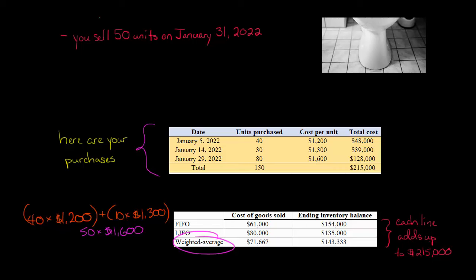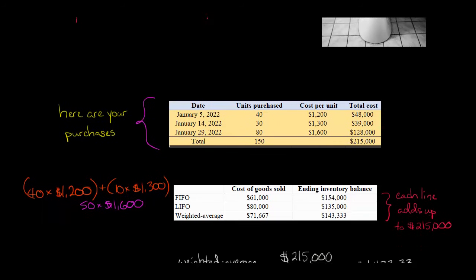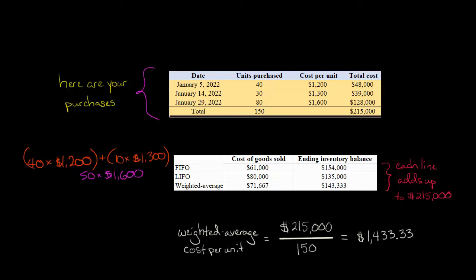And weighted average cost method is always going to be in the middle. It's going to be in the middle of these two. And I'll show you how to calculate that now. So let's get to the weighted average cost method.